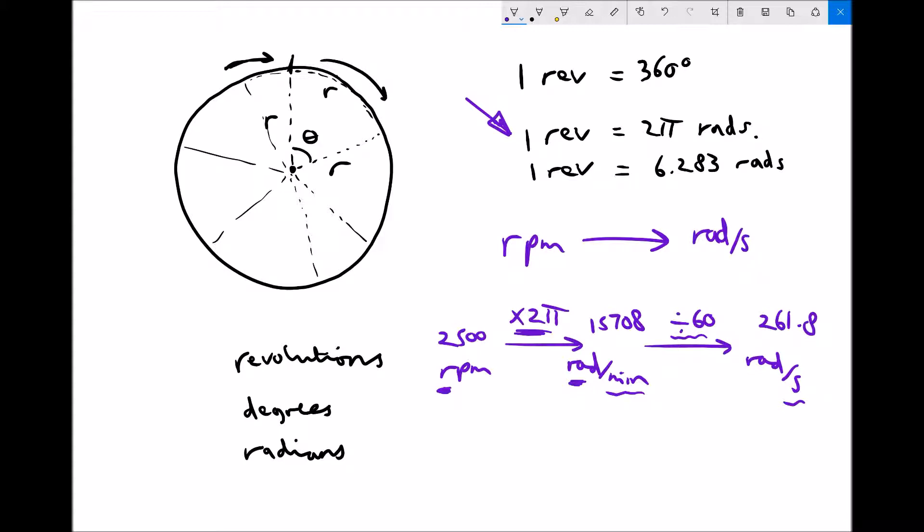We'll just do one more of these just to clarify these points. If we have a rotational speed of 7,100 revolutions per minute, first of all we need to times it by 2π. By timesing it by 2π it's going to give us the radians per minute, and in this case that's 44,611 rads per minute.